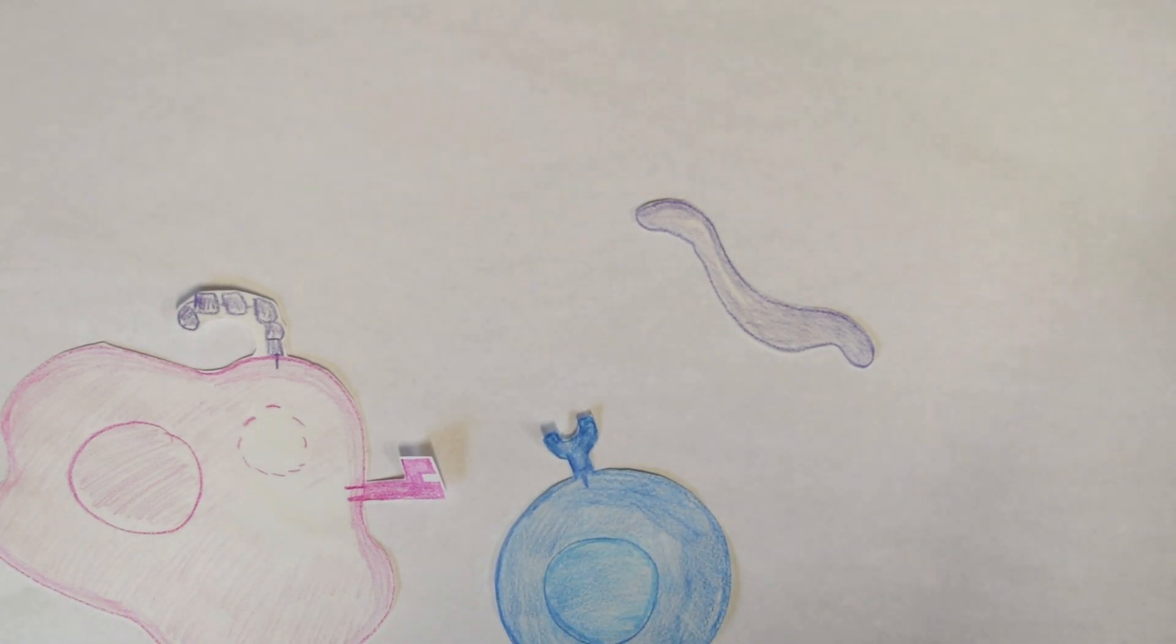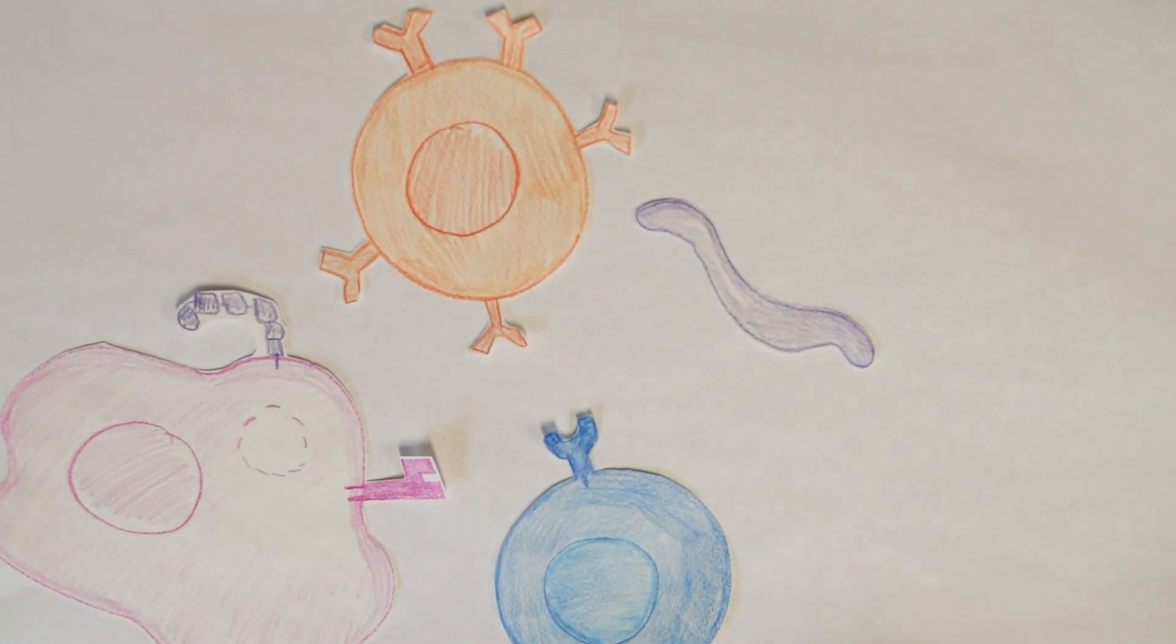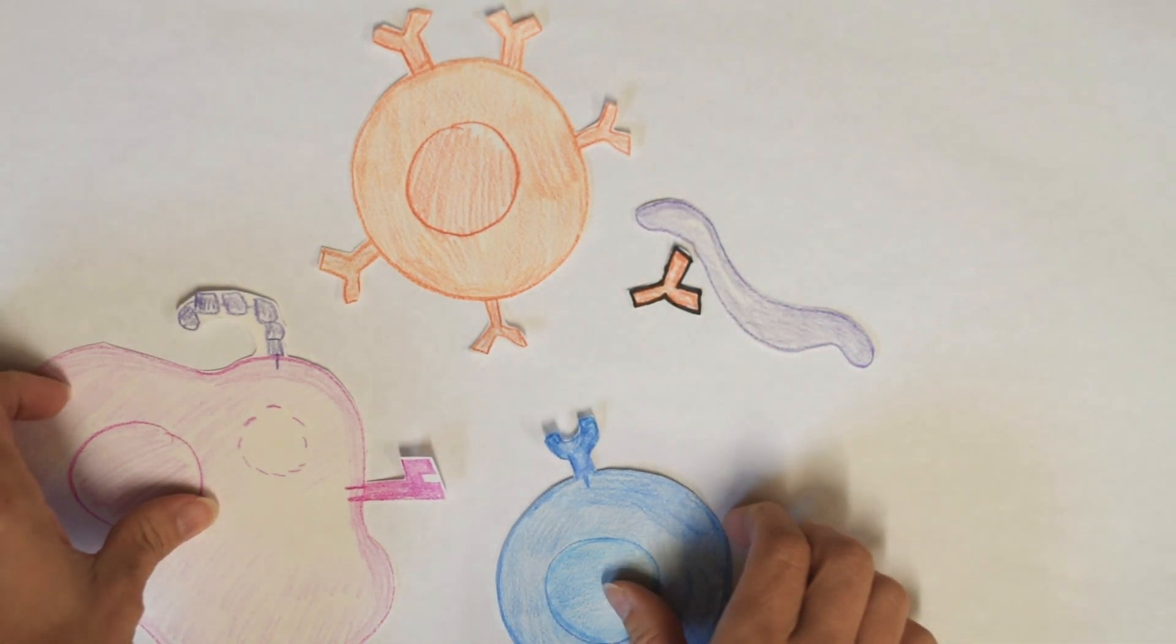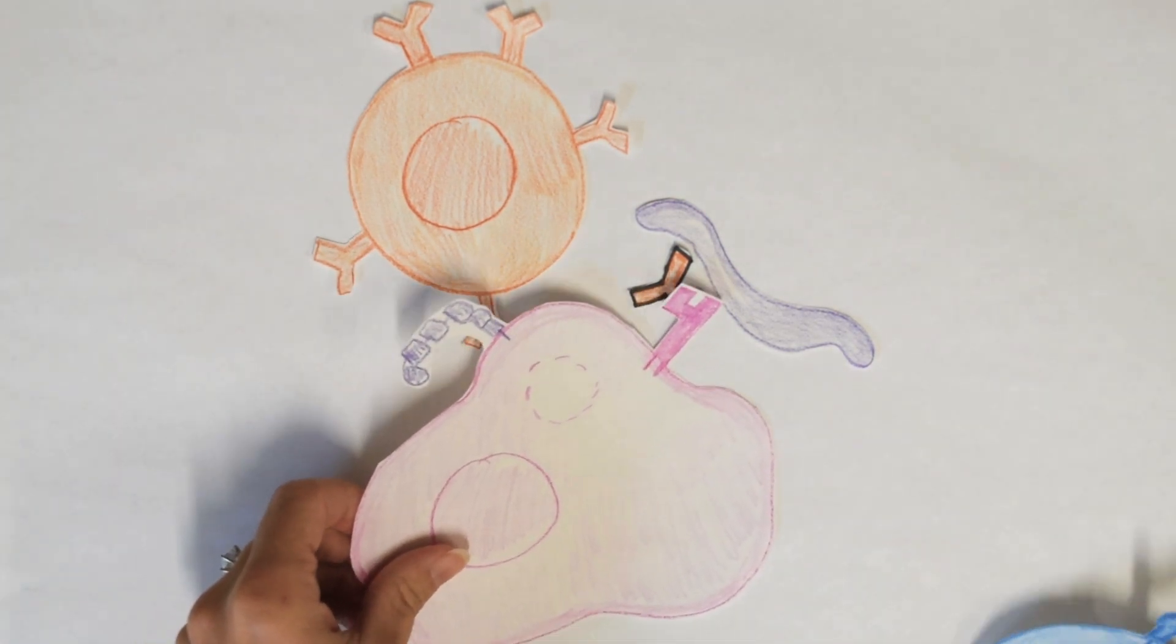So here we have the macrophage coming back to fight more of these Campylobacter, but they've brought immune friends. So here we have the T cell will also fight with inflammation, and the B cell will fight with antibodies. The antibodies will float out from the B cell and stick to the bacteria, making it very easy for the macrophage to pick up, eat, and destroy the remaining bacteria.